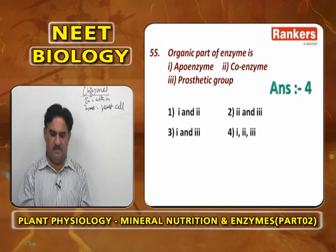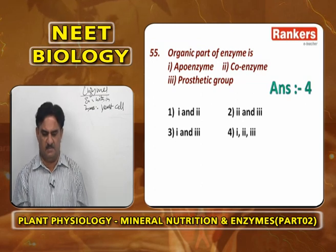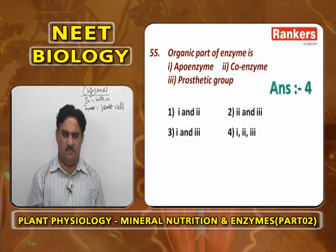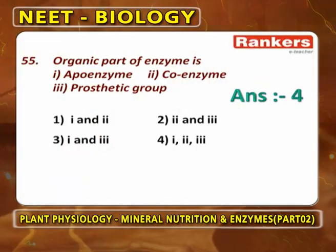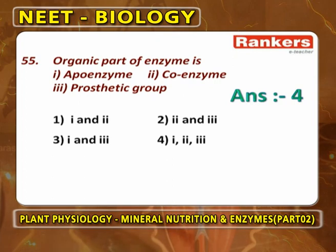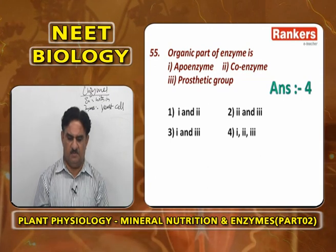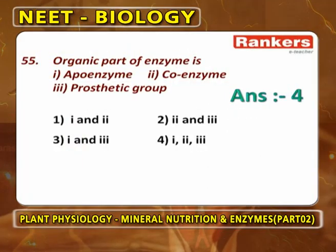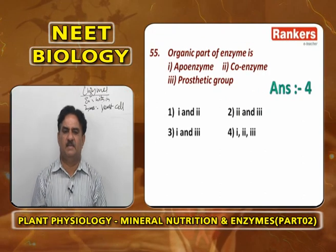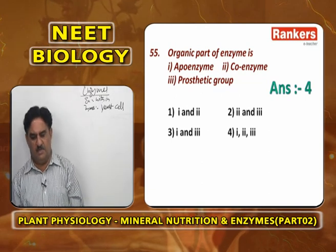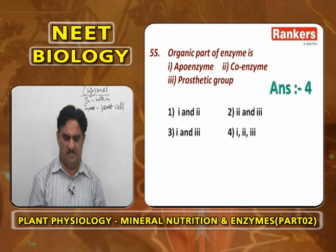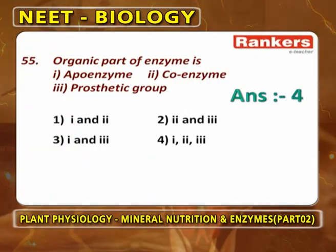The organic parts of an enzyme include: apoenzyme (which is the protein part, and proteins are organic), coenzyme (the organic part loosely attached to the apoenzyme), and prosthetic group (the organic part very tightly attached to the apoenzyme). The organic non-protein part of an enzyme would be cofactor, coenzyme, and prosthetic group — answers 2 and 3.